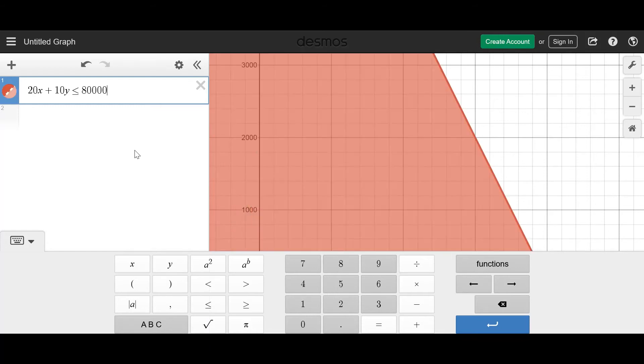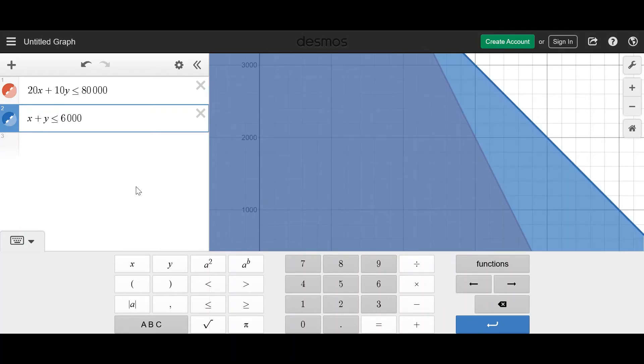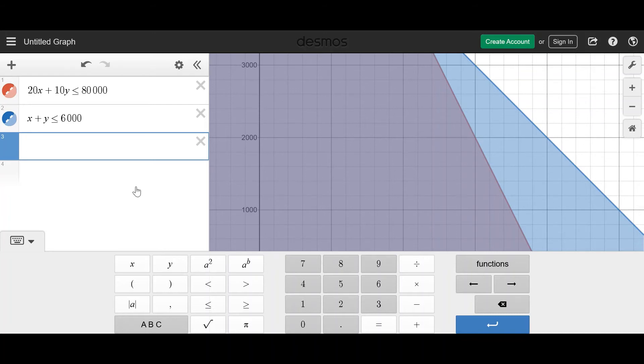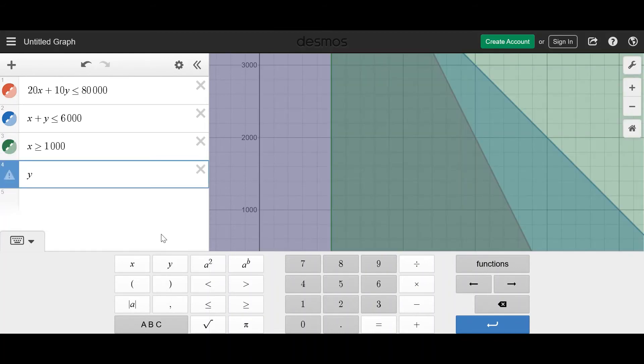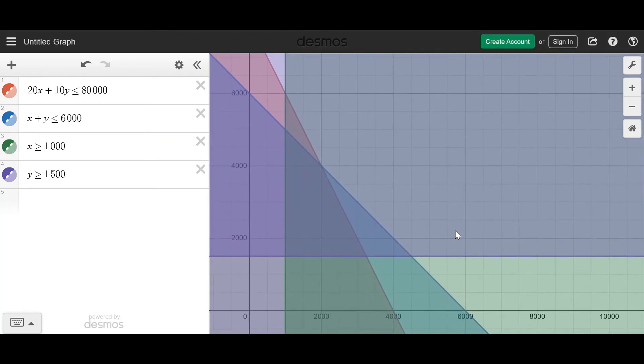We'll type those functions. So the first one was 20X plus 10Y is less than or equal to 80,000. That was the weight. And then we had X plus Y is less than or equal to 6,000. This was the volume restriction. And then we had X greater than or equal to 1,000. And then the last was Y is greater than or equal to 1,500. Once you've done that, zoom out and you will be able to see the feasible region.